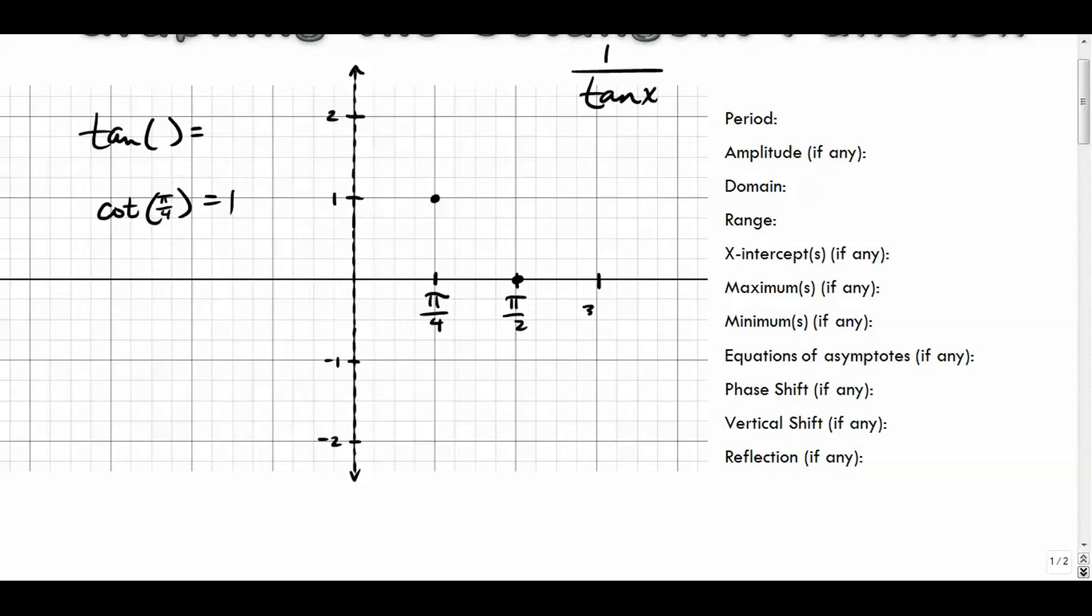So if we continue down the line here, this would be 3π/4, and this would be π. So let's see where our other values are. So tangent of 3π/4 - well, 3π/4 is in the second quadrant. The reference angle here, which we talked about in a previous video, is π/4. So to answer the tangent of 3π/4, just answer the tangent of π/4, which is one. It's in the second quadrant, and I know tangent is negative in the second quadrant.